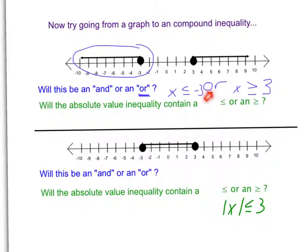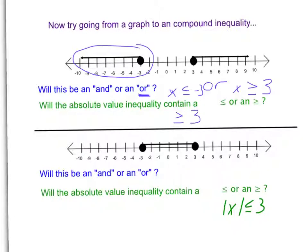After you have the compound inequality, it's like what we did on the last page. First look to see: are these numbers opposites? They are 3 and negative 3. Since this is an or, we know it's going to be the greater than or equal to — that is something you need in your notes and on your cheat sheet. The or is always the greater than or greater than or equal to. We're going to use the positive number and take whatever is on the other side of this inequality and put it in the absolute value symbols. So you went from the graph to the compound inequality to the absolute value inequality.